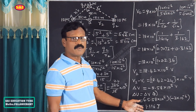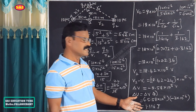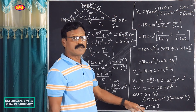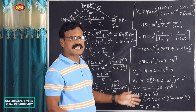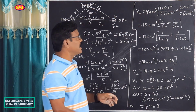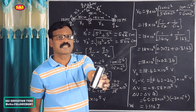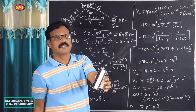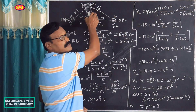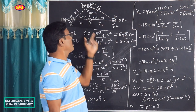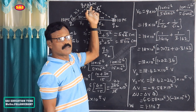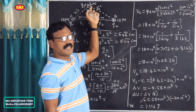Interpreting the result: since the change in potential energy is positive (ΔU = +1.116 J), the work done is positive. This means external work must be done to move the -2 microcoulomb charge from point A to point B. External energy must be supplied to the system to accomplish this displacement.